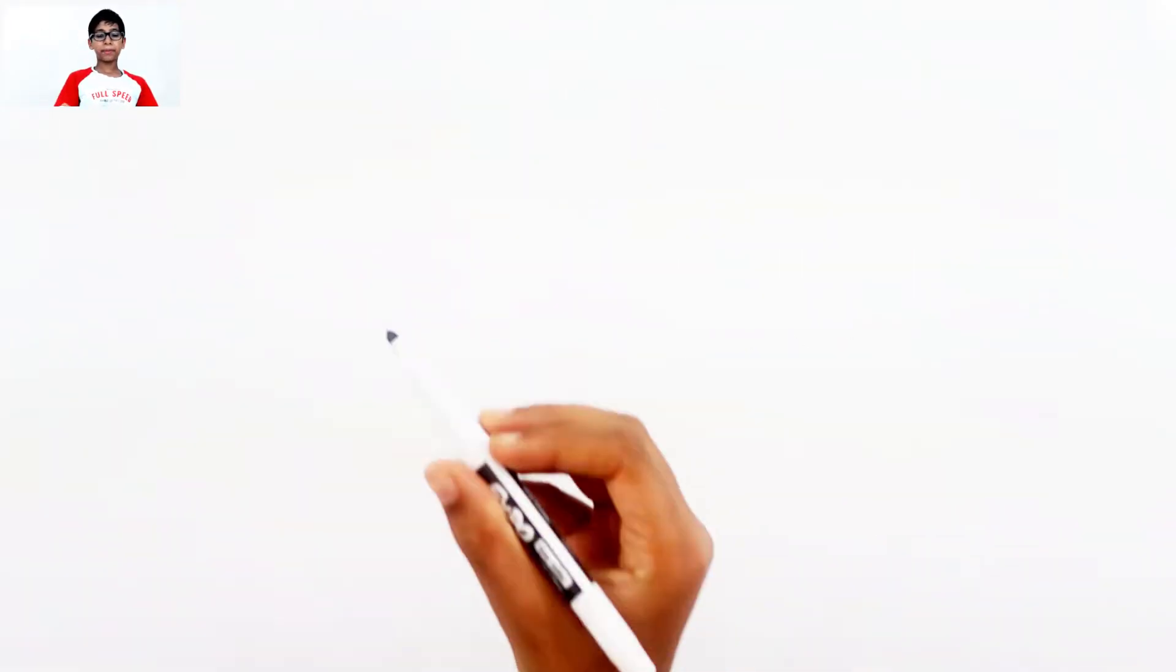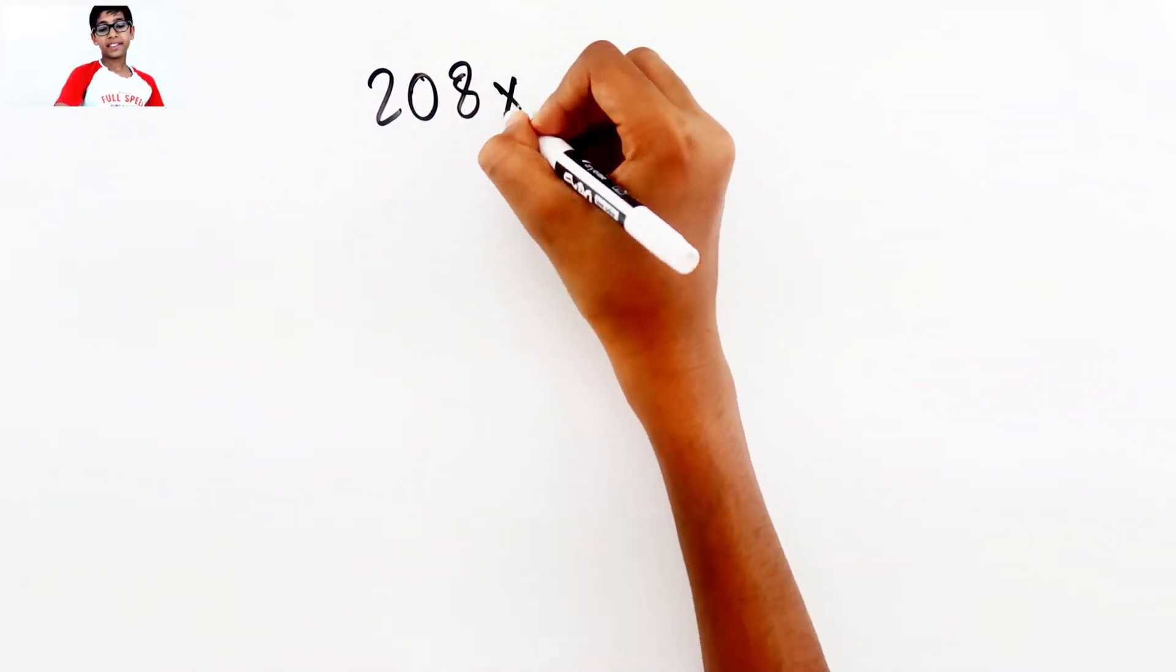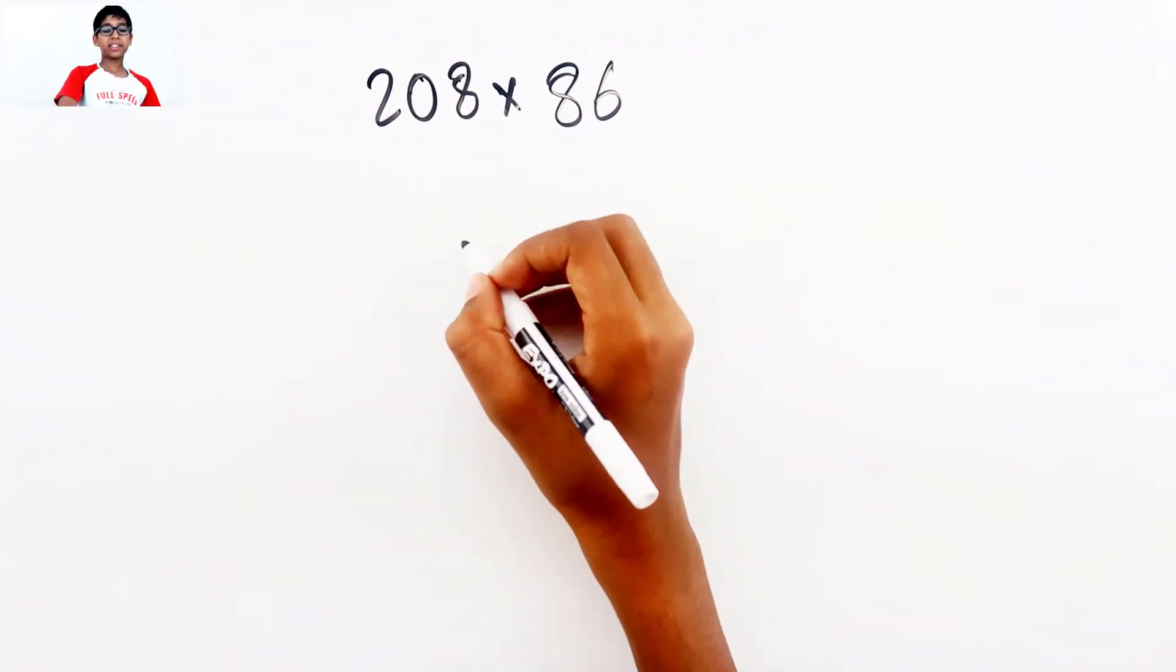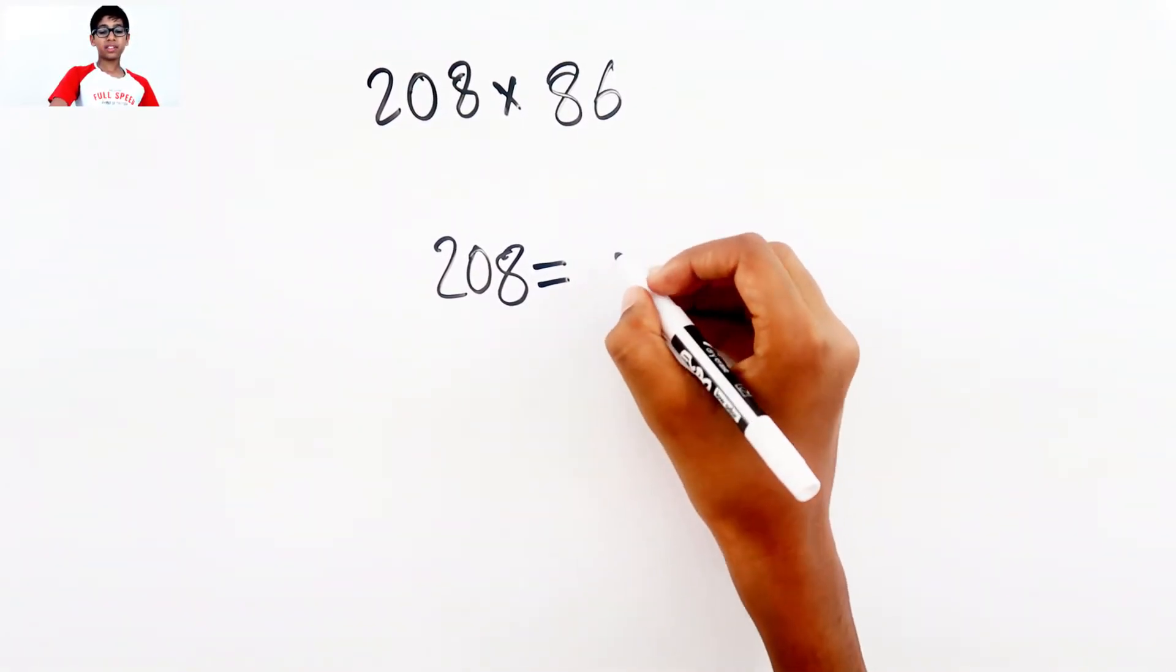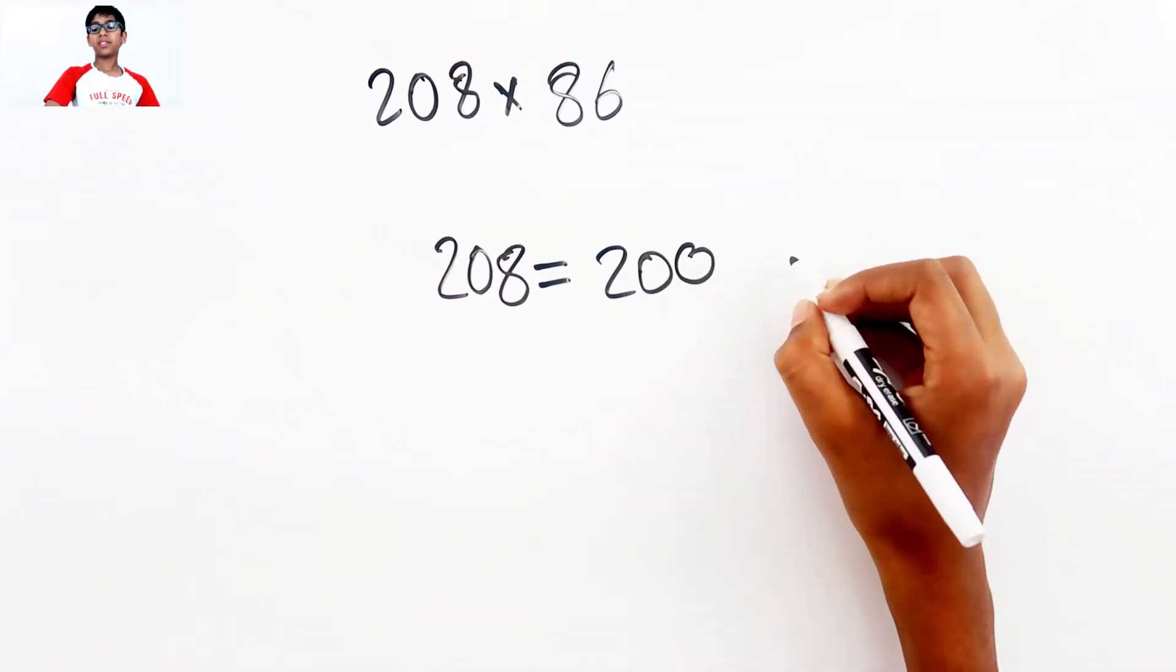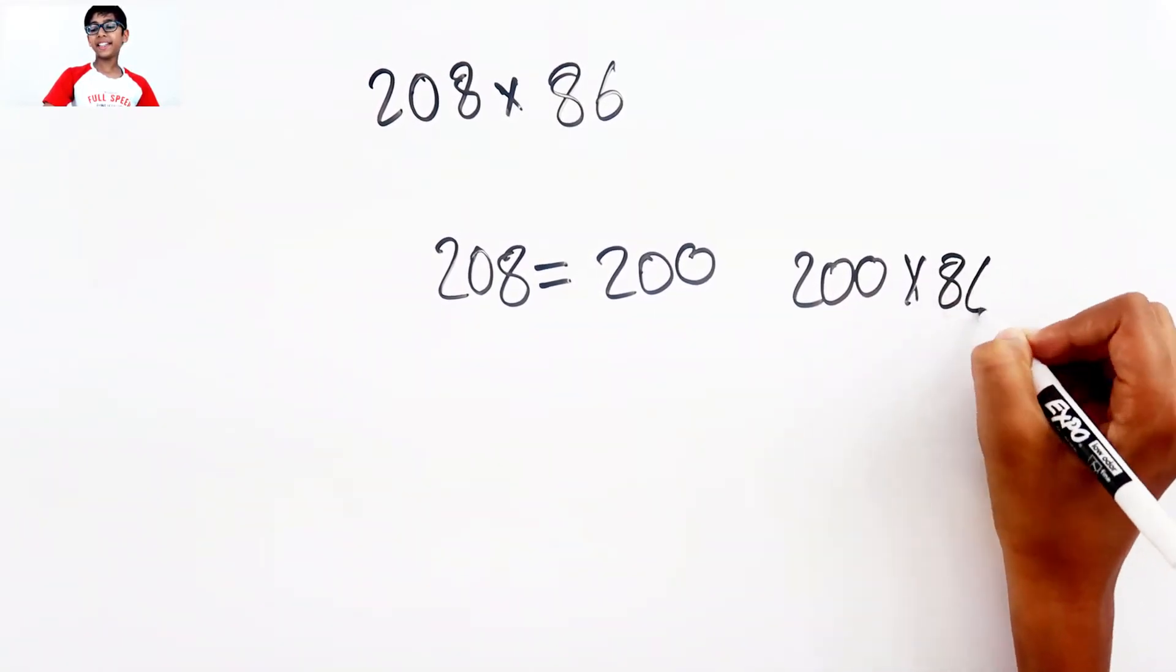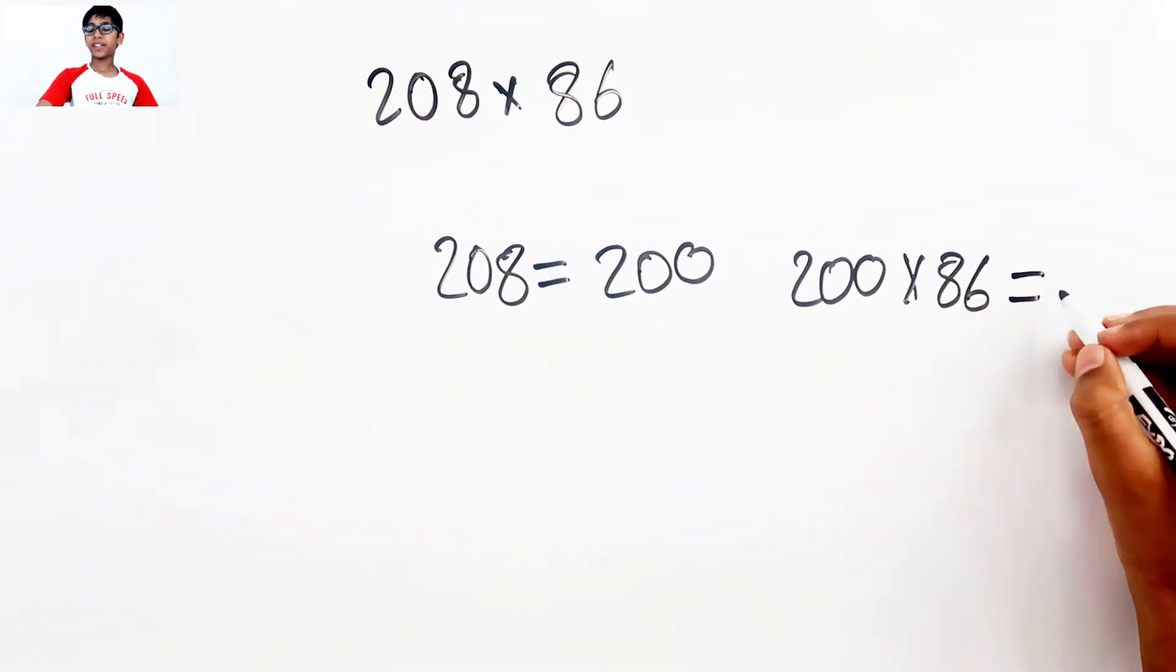Now the next problem is going to be 208 times 86. So let's turn the 208 into 200.